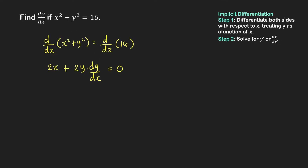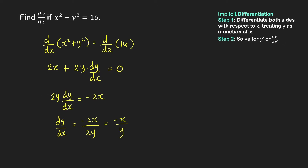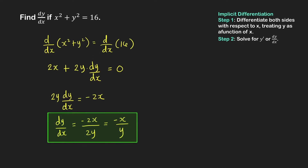Step 2: solve for dy over dx. Moving 2x to the right-hand side, we get 2y times dy over dx equal to negative 2x. Dividing both sides by 2y gives dy over dx equal to negative 2x over 2y, which simplifies to negative x over y. Therefore, the derivative of y with respect to x is equal to negative x over y.